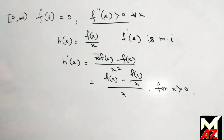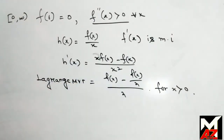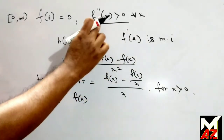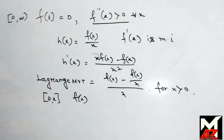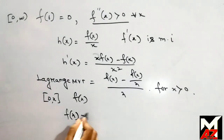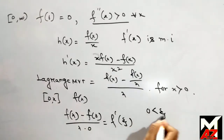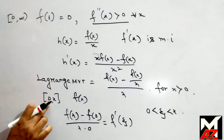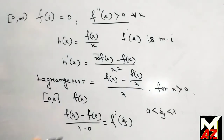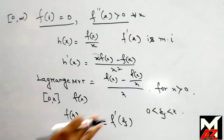Now if we apply Lagrange's MVT on the interval (0, x) on the function f(x) — because f(x) is differentiable twice, so the first derivative must exist, meaning it is continuous also — we apply Lagrange's MVT theorem and get: [f(x) − f(0)] / [x − 0] = f'(ξ), where 0 < ξ < x. Since f(0) = 0, we get f(x)/x = f'(ξ).